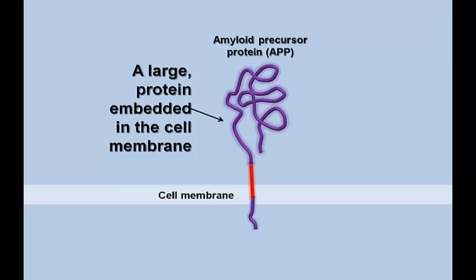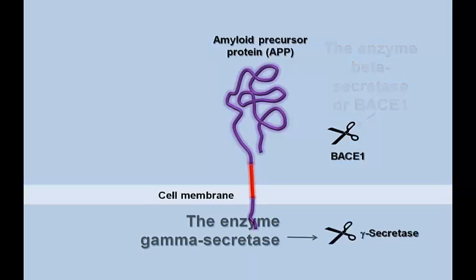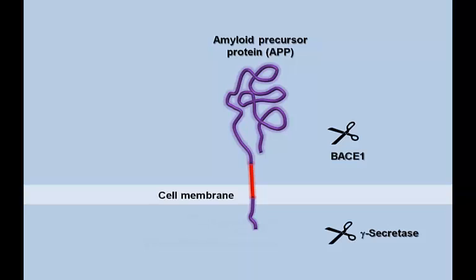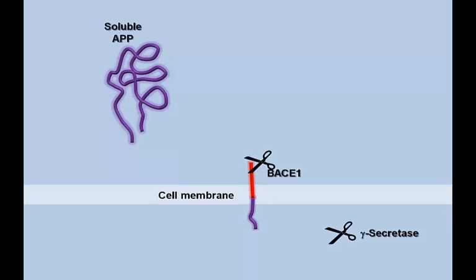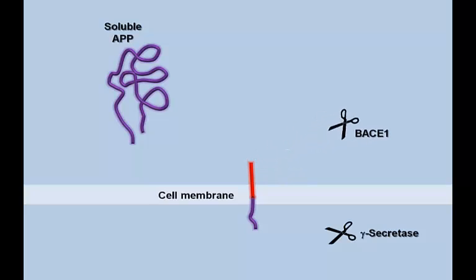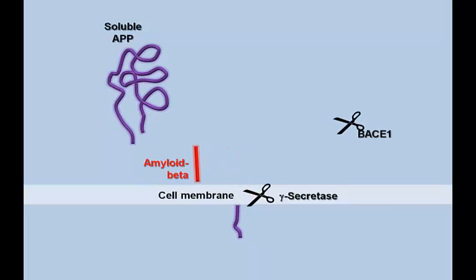Two enzymes are going to cut up this large protein. The enzyme beta secretase, known as BACE1, and the enzyme gamma secretase work in sequence to do just that. BACE1 first cuts off a large chunk of the protein, which is released as soluble APP. Then gamma secretase cuts the remainder of the protein in the membrane to release amyloid beta peptide outside of the cell, plus a peptide piece that remains inside the cell.